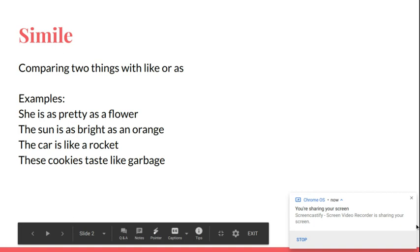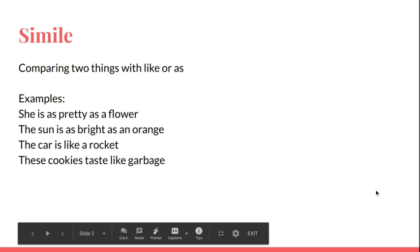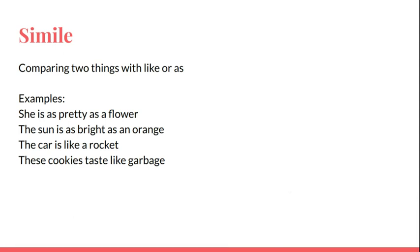A simile is when you compare two unlike things using like or as. A girl is very different from a flower, but you're comparing her to a flower using as.